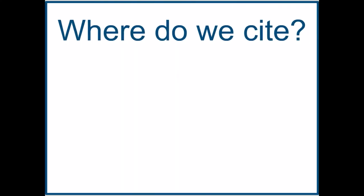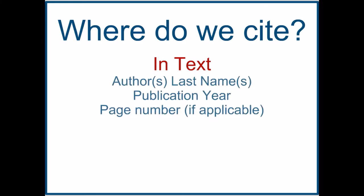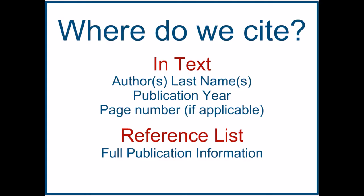And then, where do we cite? An in-text citation should include the author's last name, the year that the source was published, and a page number if applicable. There's also a reference list at the end of your document, which should include the full publication information for everything that you've cited.